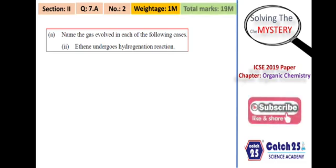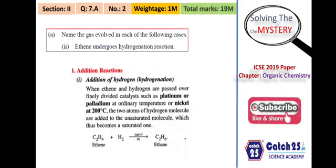The last question from this chapter in the 2019 paper asks: ethyne undergoes hydrogenation — which gas will be evolved? Hydrogenation means the addition of hydrogen. Ethyne is an alkyne, and when hydrogen is added to it, it ultimately gives ethane. The reaction is: C₂H₂ + H₂ → C₂H₄ (first step), then C₂H₄ + H₂ → C₂H₆. This is catalytic reduction using nickel (with heat), or platinum or palladium (at room temperature). The gas evolved is ethane.